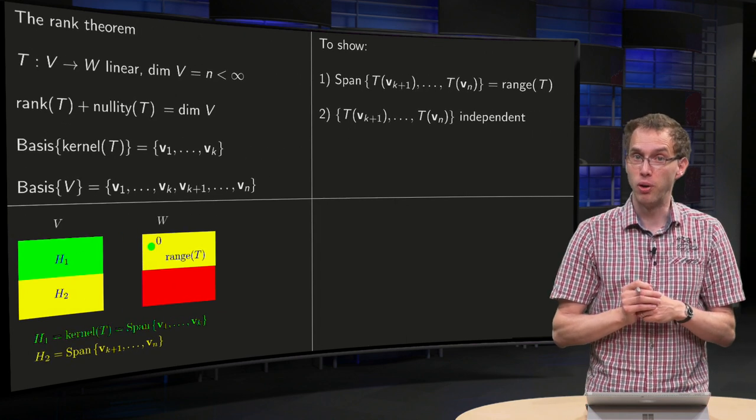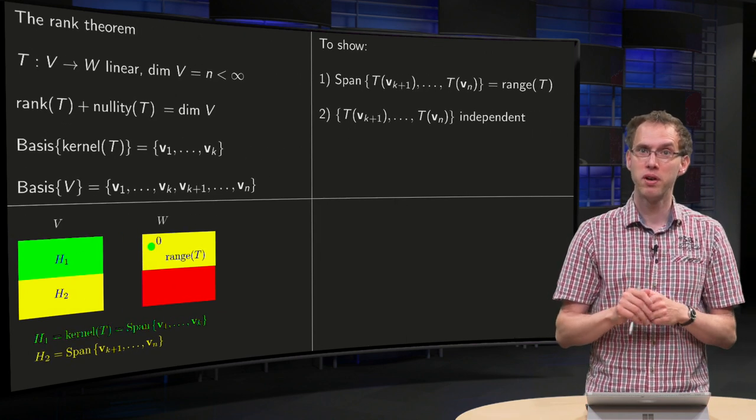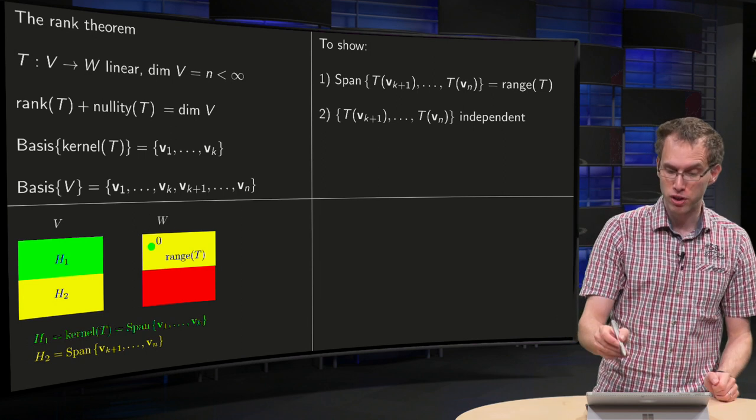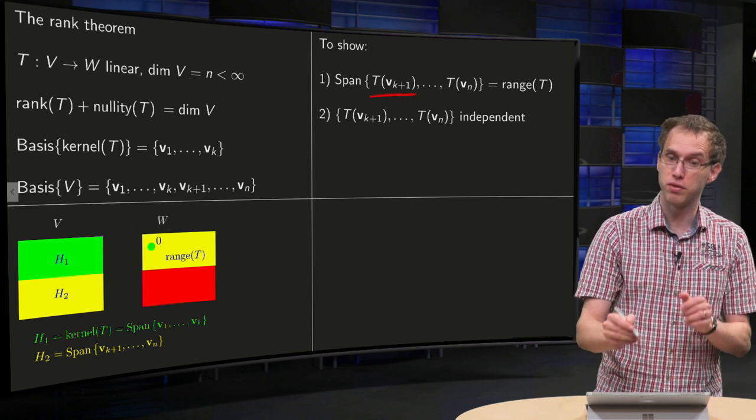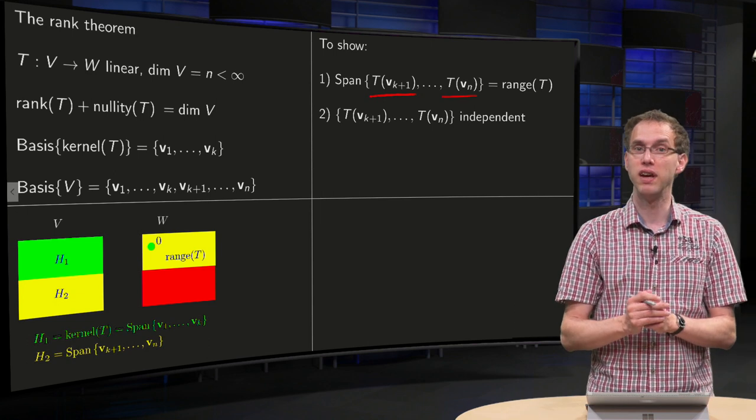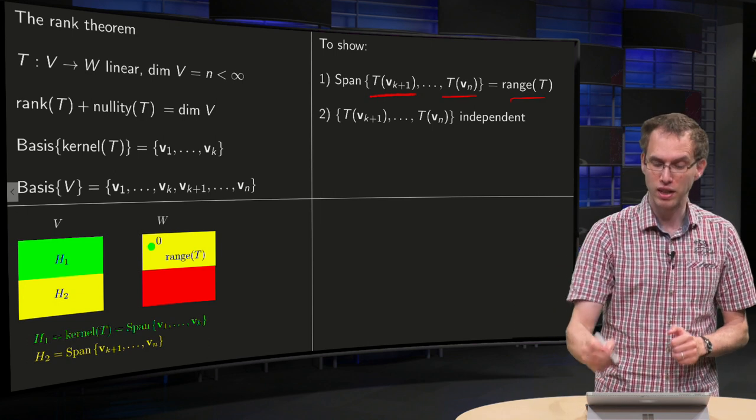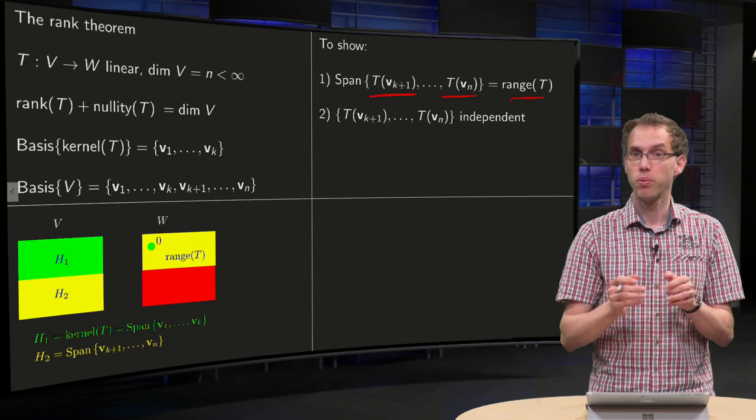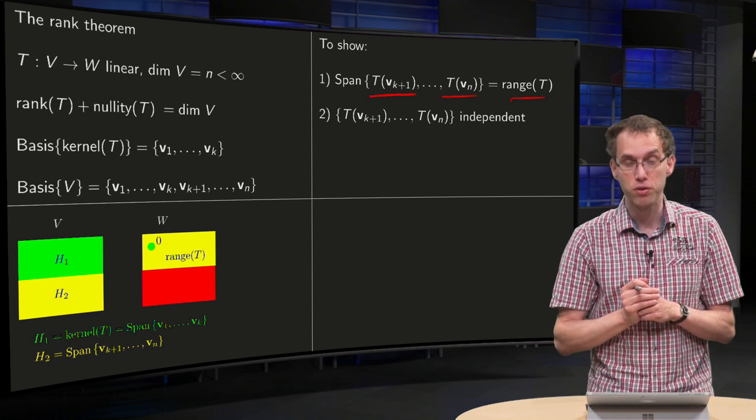Now, what do we have to show then to really prove the theorem? Well, first of all, we have to show that the span of the image of vk plus 1 up to T(vn) is indeed the range of T. So, actually that means that you have to prove two things.